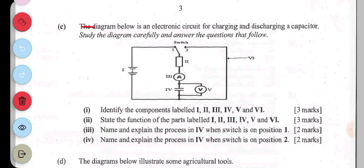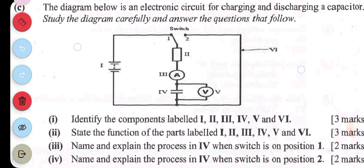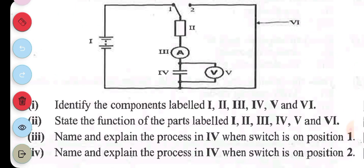The diagram below shows an electronic circuit for charging and discharging a capacitor. The first question asks us to identify the components. Component i is a battery or direct current power source. Component ii is a resistor. Component iii is an ammeter. Component iv is a capacitor, and component v is a voltmeter. Component vi is the wire.